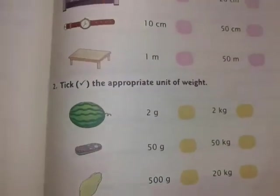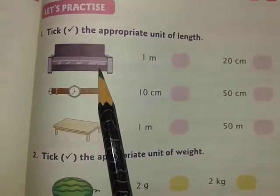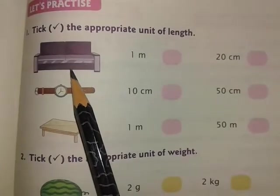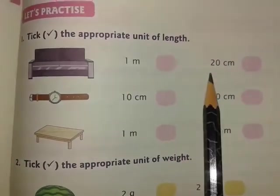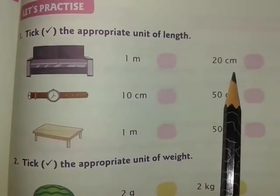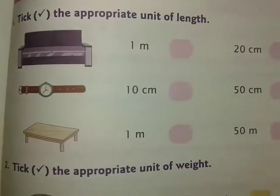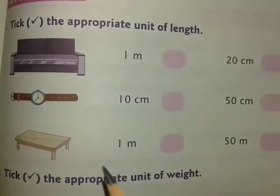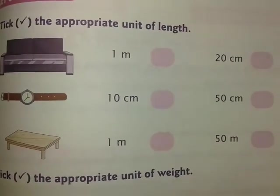This one is also the same way. A sofa is given - what can be the appropriate unit of length of this sofa? Do you think this sofa will be measured as one meter or will it be 20 centimeters? Use your idea - think about how much length is 20 centimeters and how much length is one meter - and select the correct appropriate length for this sofa.